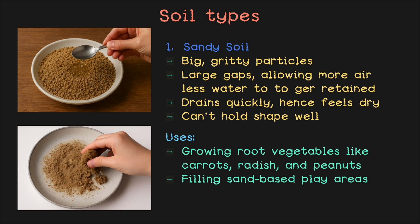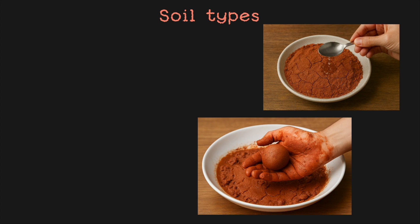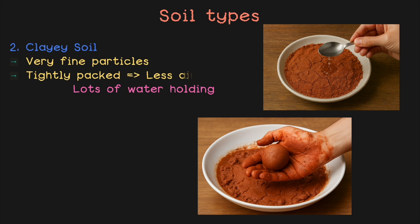It is also easy for kids to dig and shape during play. Now, in the activity, if instead of crumbly soil your fingers got messy while making the balls but the ball turned out neat and tight, then you have clayey soil — the sticky one. Clayey soil has very fine particles that are tightly packed, so naturally there is less air between them. Because of less gap and less air, it can hold a lot of water between the particles, which is why it becomes smooth and sticky when wet.